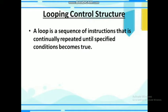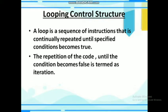The looping control structures are: for loop, while loop, and do-while loop. In this video we will be discussing the for loop. A loop is a sequence of instructions that is continually repeated until a specified condition becomes false. The repetition of code is terminated, and the term given for this repetition is known as iteration.